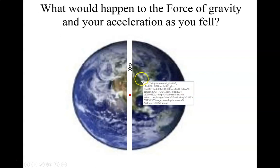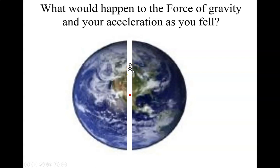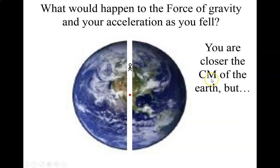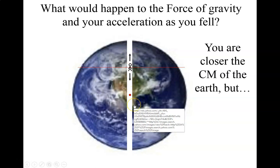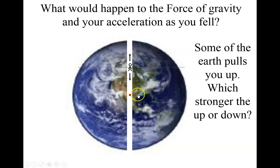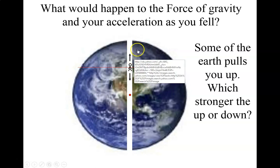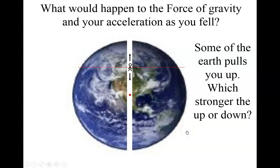Now, let's look at what would happen to the force of gravity on you and your acceleration as you fell. So let's say we're halfway. So what would happen to the force of gravity and your acceleration as you fell? So you're closer to the center of mass of the planet. But something interesting is going on. Part of the planet now is pulling you up. And the other part of the planet is pulling you down. So, which is stronger? The force pulling you up or the force pulling you down based on the amount of the Earth that's doing that? Well, certainly the force pulling you down would be stronger. But it's still being canceled out slightly by some of it pulling you up.